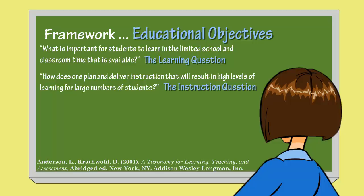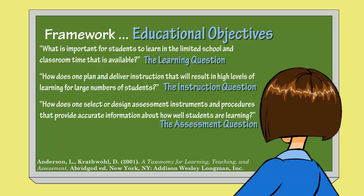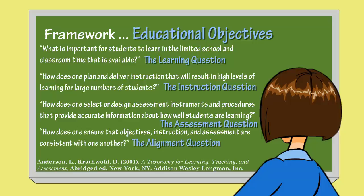Third, Anderson asks: how does one select or design assessment instruments and procedures that provide accurate information? This is the assessment question. Like the instruction question, the table can help identify the different types of assessment that may be necessary based on the different domains of the table. Finally, Anderson and the others ask: how does one ensure that objectives, instruction, and assessment are consistent with one another? Without alignment, instruction may not influence student performance. The table will allow for comparison of all three pieces — objectives, activities, and assessments. The greater they are aligned, the stronger the connections.